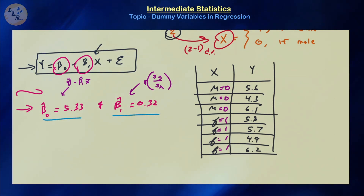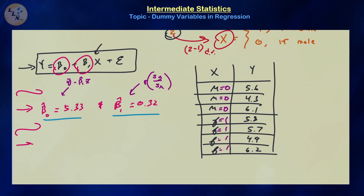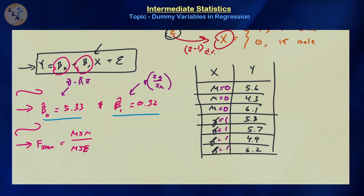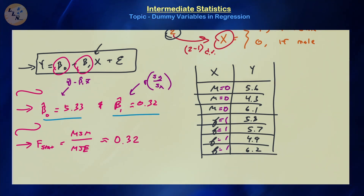Now that we have our model, we calculate our typical ANOVA table metrics: SSE, SSM, MSE, MSM, SST, and MST. The F-test statistic equals MSM divided by MSE — the mean square for the model over the mean square error for the residual — and you should find this is approximately equal to 0.32.